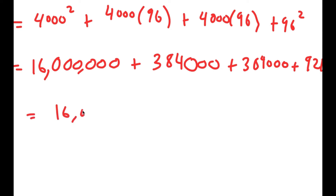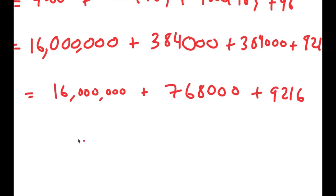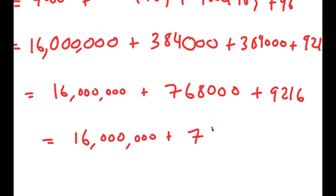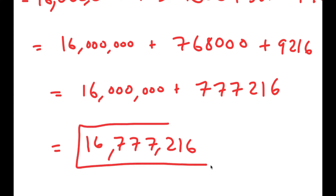Adding these up: 16,000,000 plus 384,000 plus 384,000 gives 16,768,000, and adding 9,216 gives 16,777,216. So the final answer to this problem is 16,777,216.